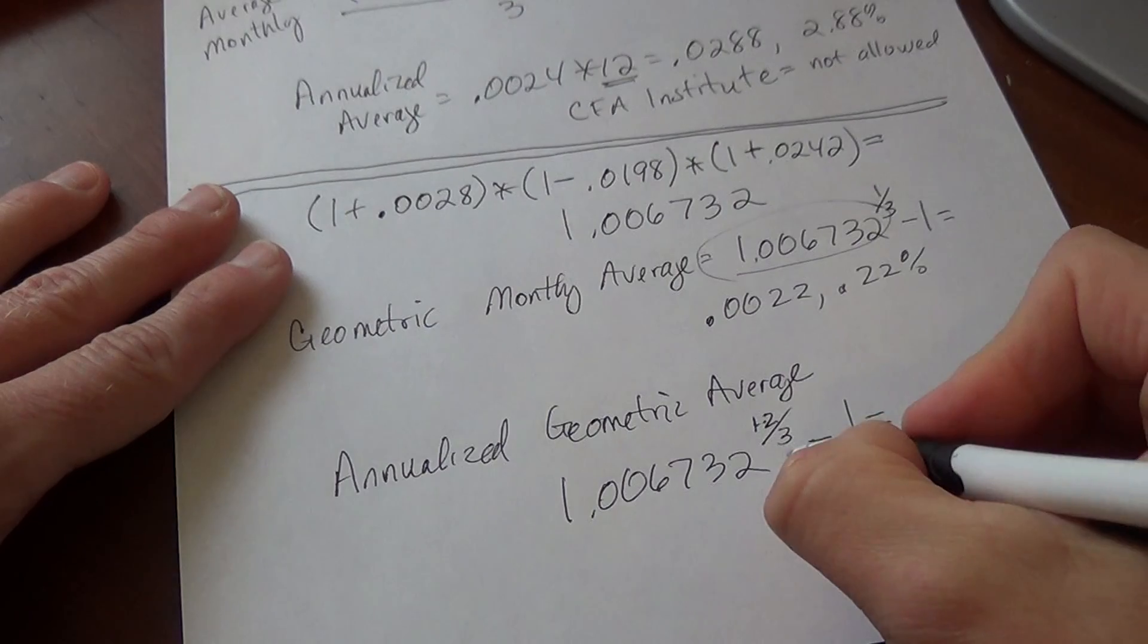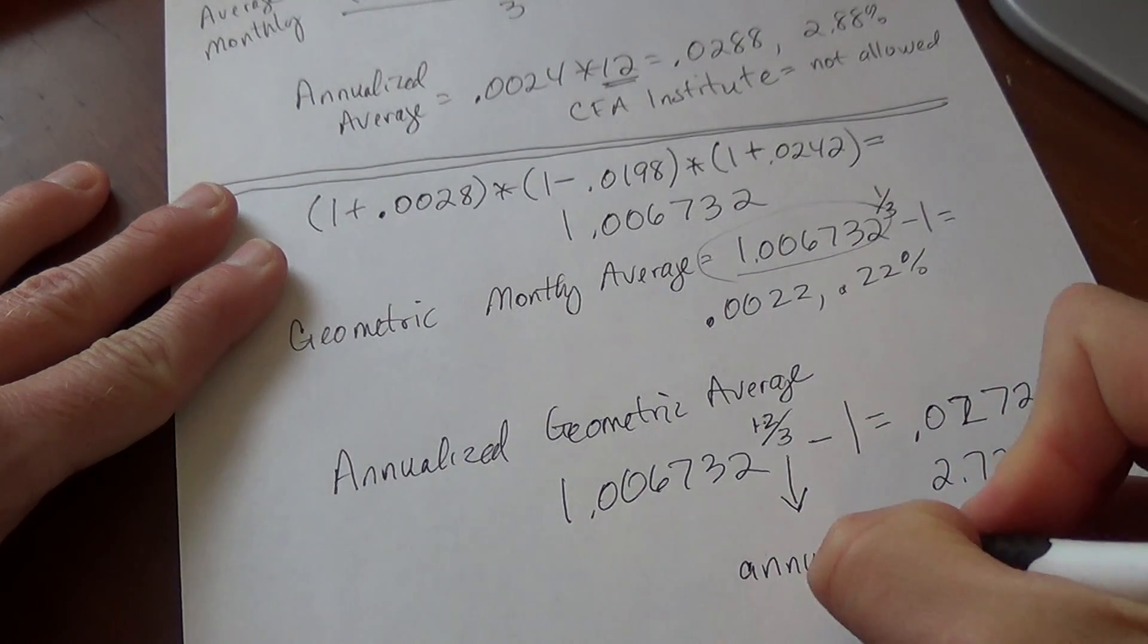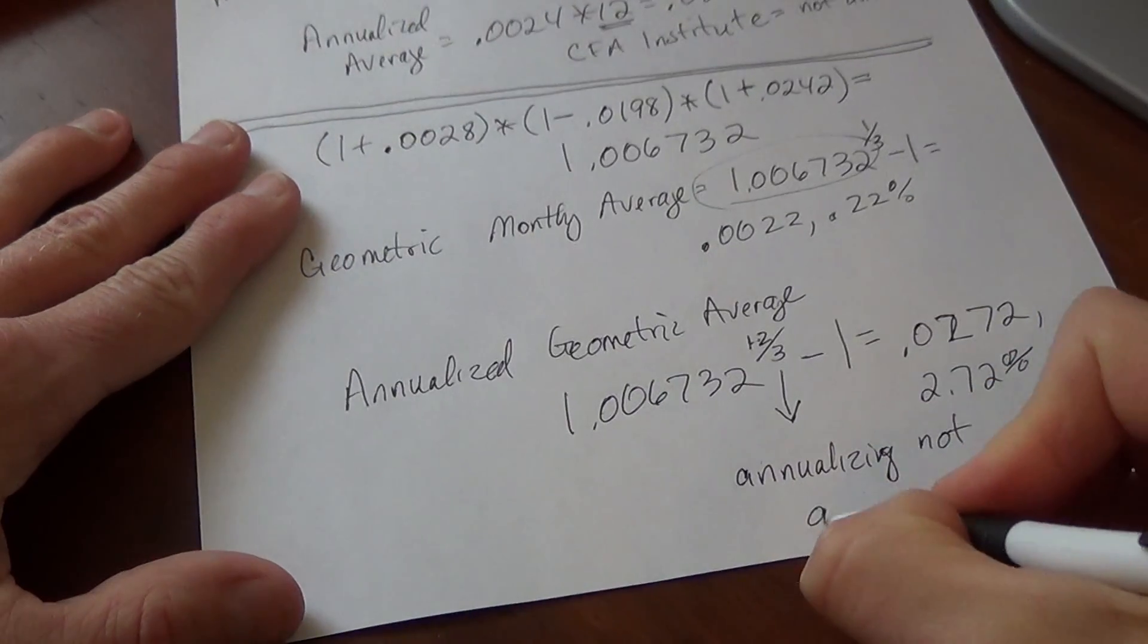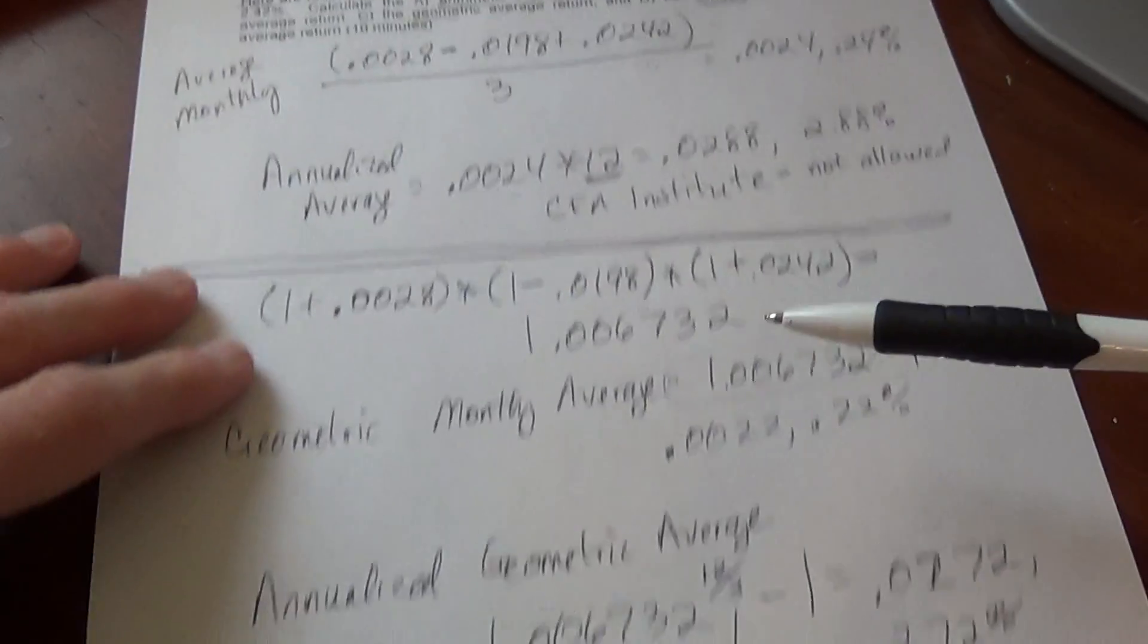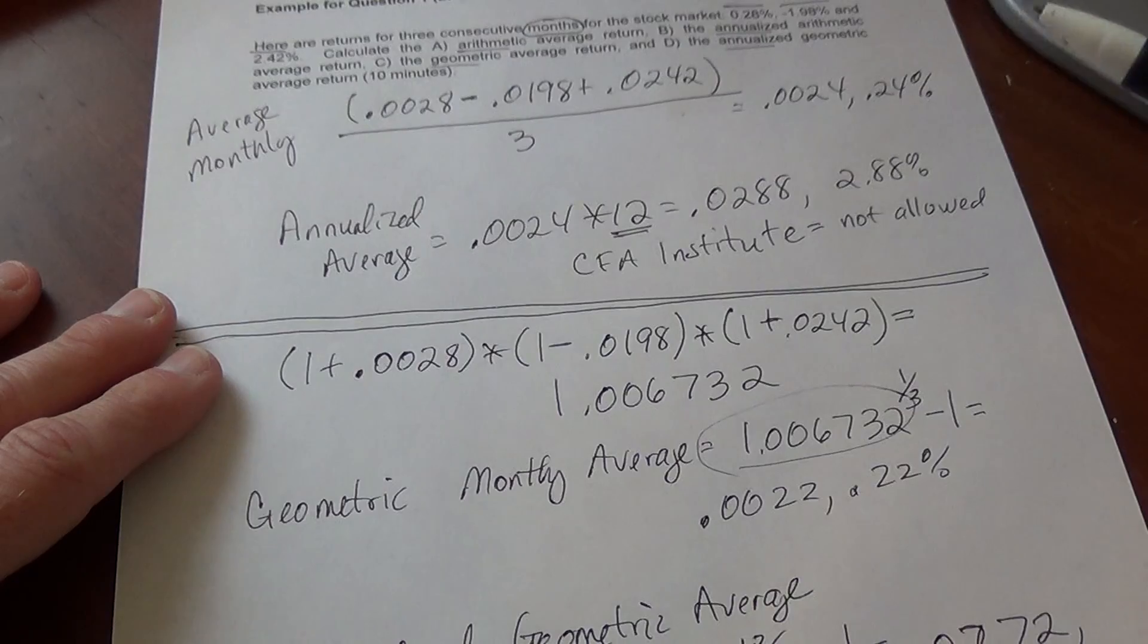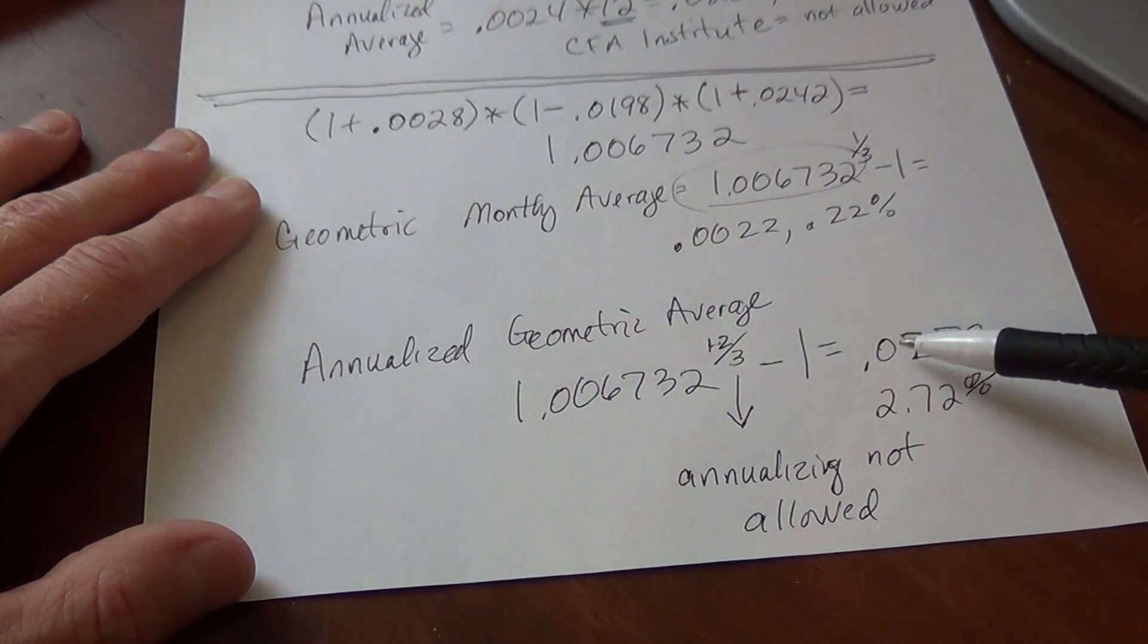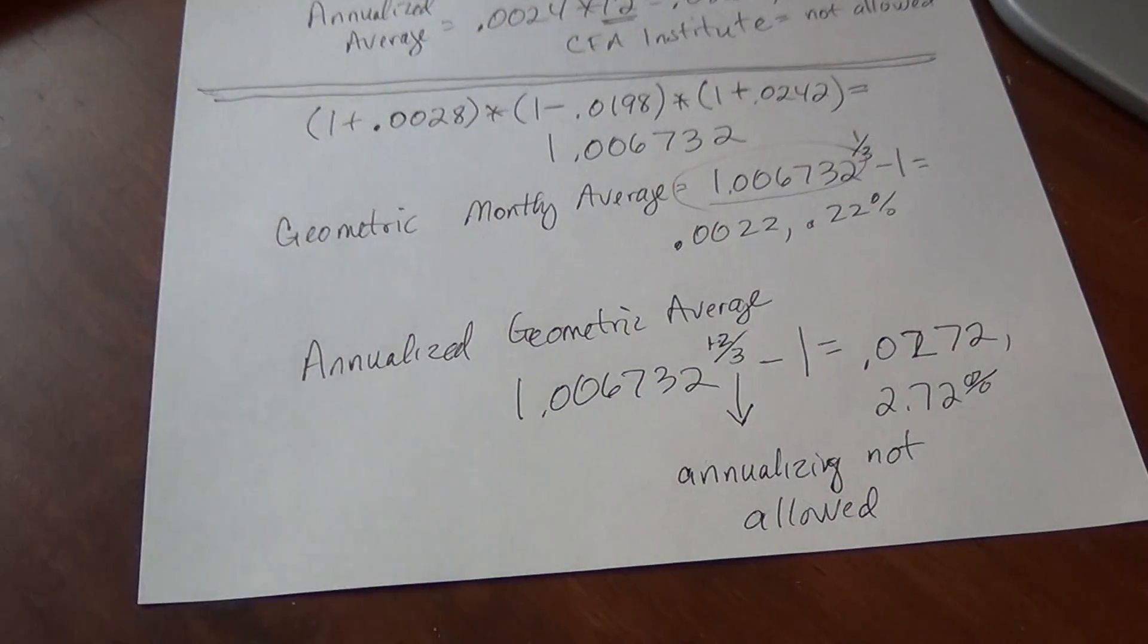And again, you make the comment that annualizing is not allowed. Why? Because according to CFA, you're not allowed to annualize if you have less than one year's worth of data, where you only have 3 months' worth of data. So in this case, I want you to calculate the annualize, but once you calculate it, then note that it's not allowed by the CFA. Thanks.